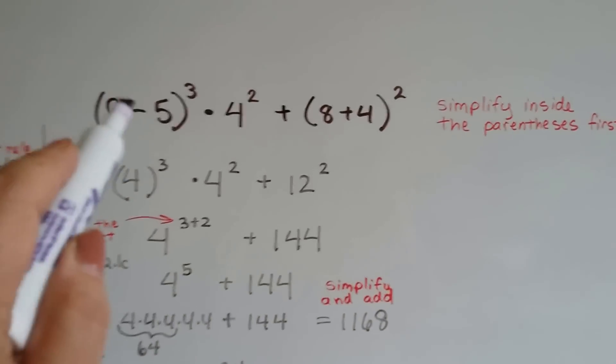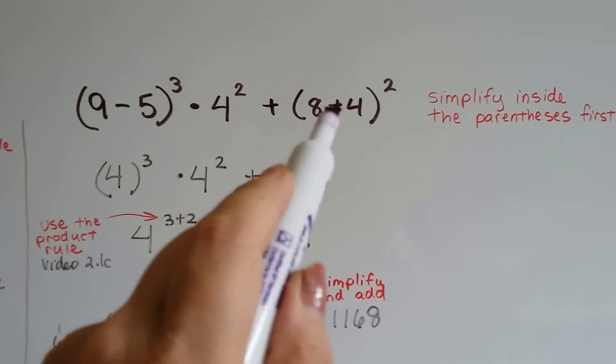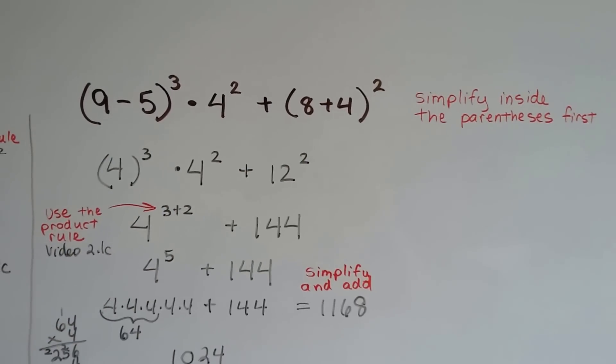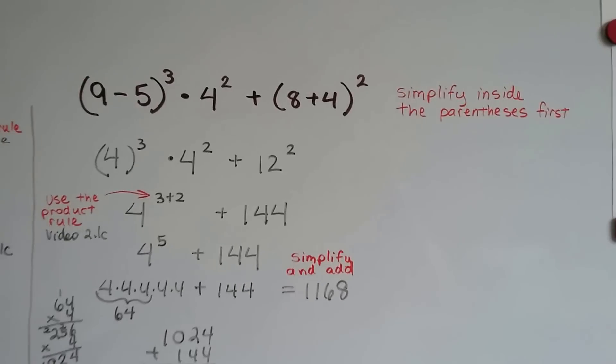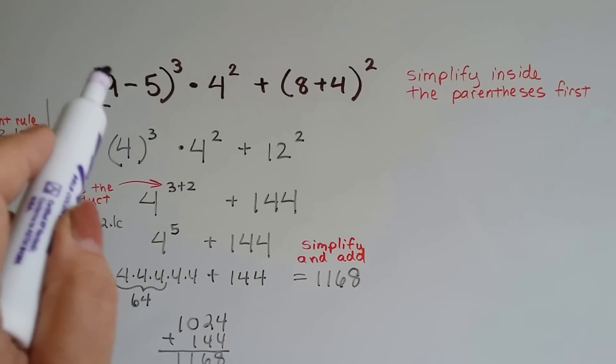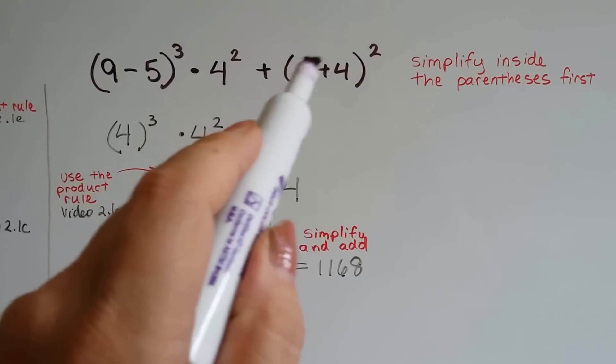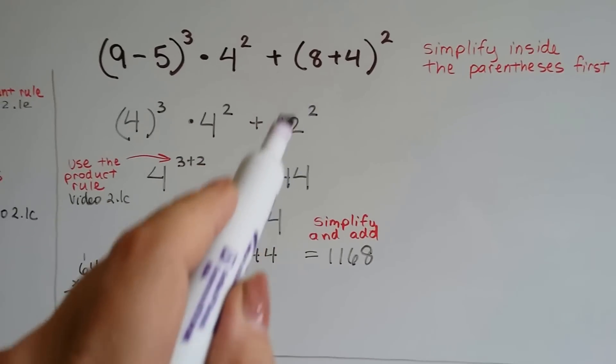Let's try this one. We've got 9 minus 5 to the 3rd power times 4 to the 2nd power plus 8 plus 4 to the 2nd power. It looks difficult, doesn't it? But it's not. We're going to simplify inside these parentheses first. 9 minus 5 is 4, so we've got 4 to the 3rd power. 8 plus 4 is 12, so we've got 12 to the 2nd power.